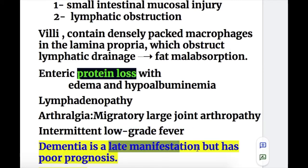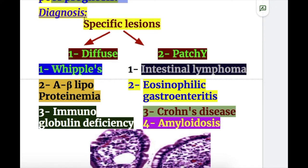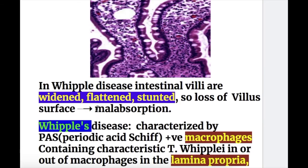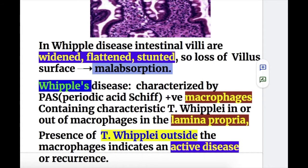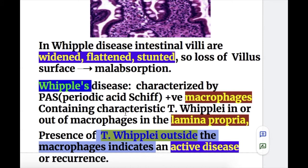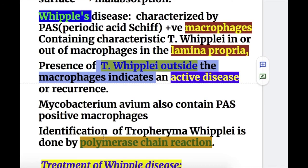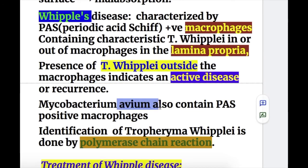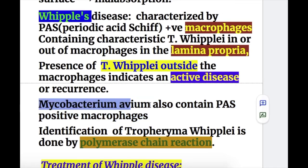Dementia is a late manifestation of Whipple's disease and has poor prognosis. Diagnosis: intestinal biopsy shows diffuse specific lesions, stunted flat villi, and PAS-positive macrophages. Presence of T. whipplei outside the macrophages indicates an active disease or recurrence of the disease. Mycobacterium avium infection also produces PAS-positive macrophages.